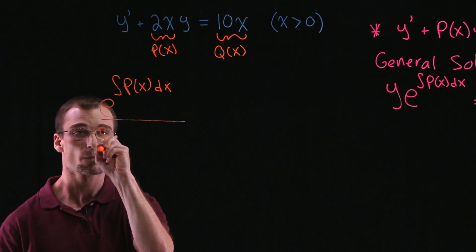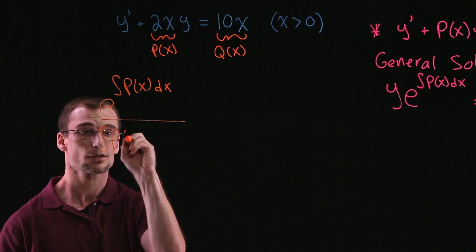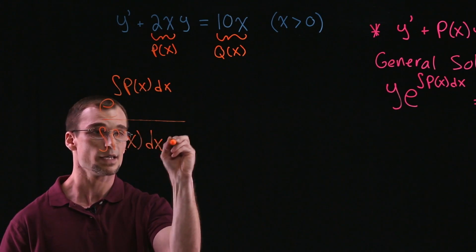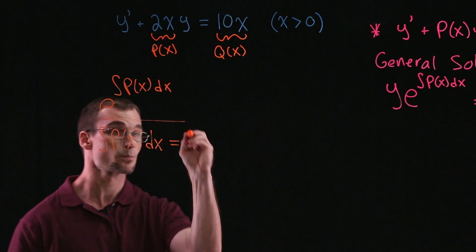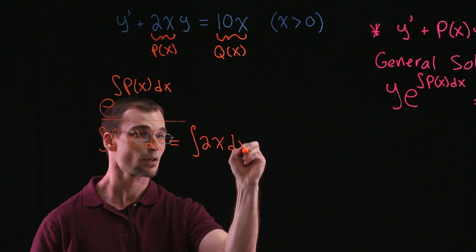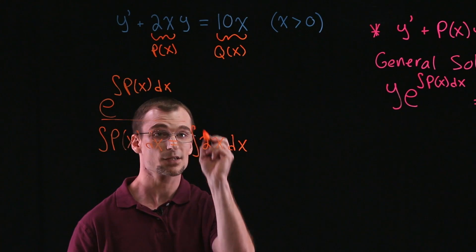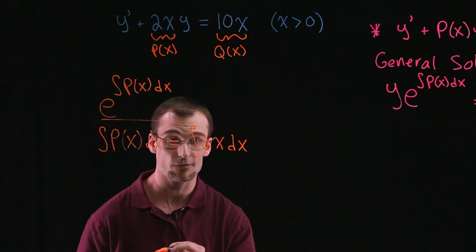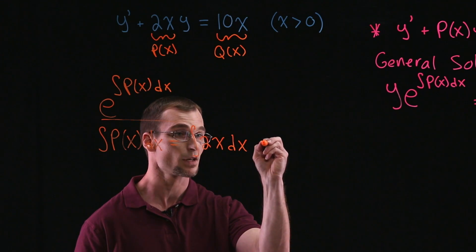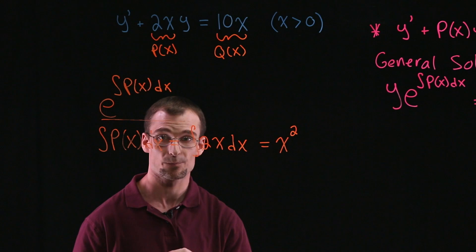First, we'll find the integral of P(x) dx. So the integral of our P(x) dx is equal to integral of 2x dx. And so 2 being a constant, antiderivative of x is 1 half x squared. 2 times 1 half is just 1, so we're left with just x squared.